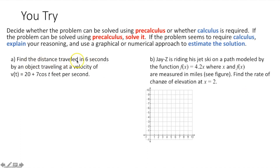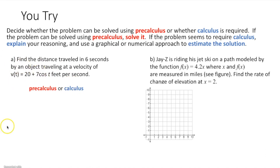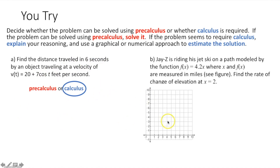This says: find the distance traveled in 6 seconds by an object traveling at a velocity of 20 + 7cos(t) feet per second. This might look like a dirt formula, but the problem is our velocity is not constant — it's a function, 20 + 7cos(t). So we're going to have to use calculus, because we can't find the distance traveled over those 6 seconds if our velocity is constantly changing. The actual answer would be 118.044 feet.